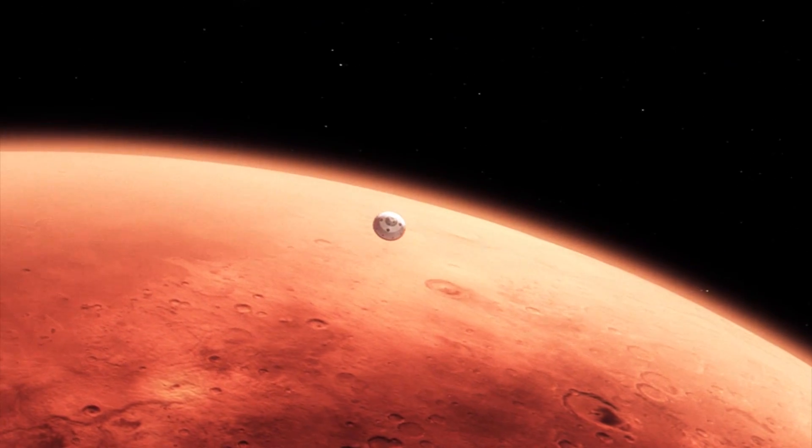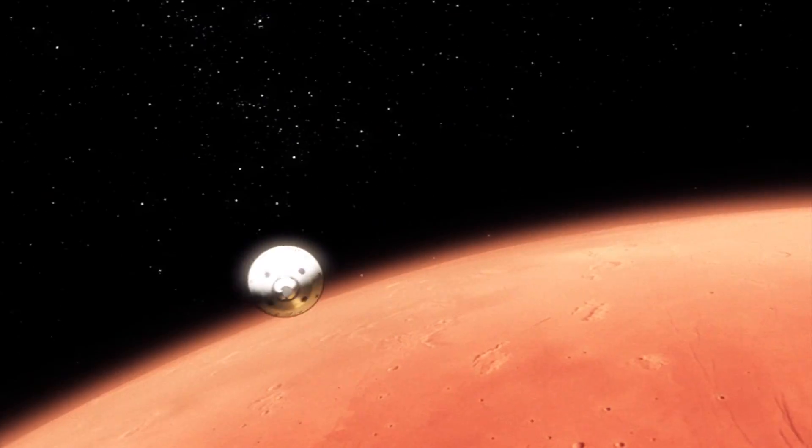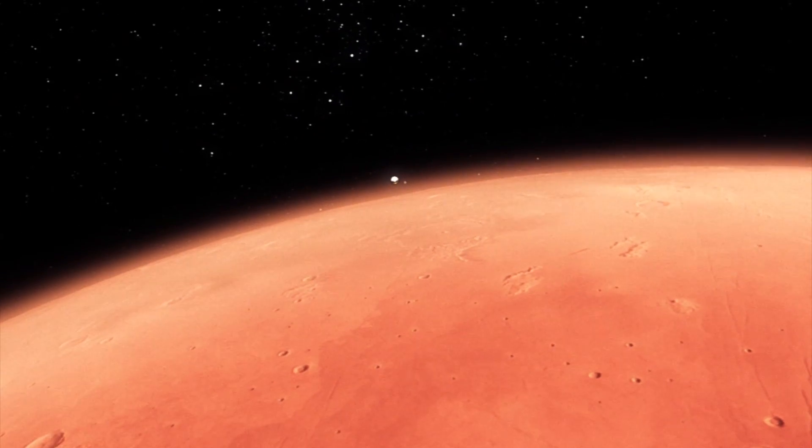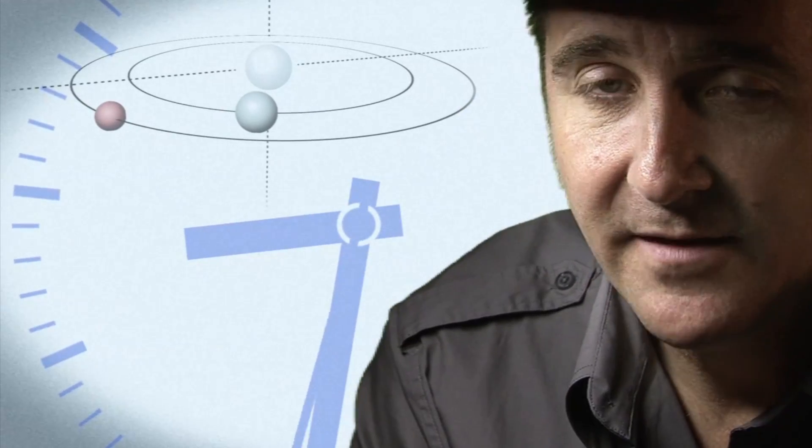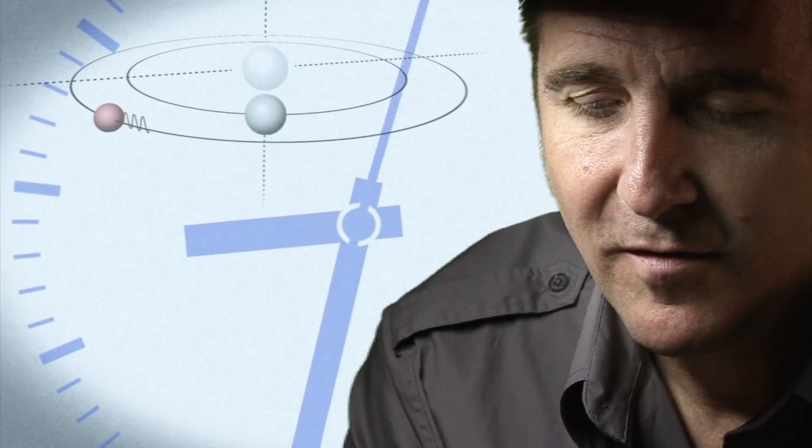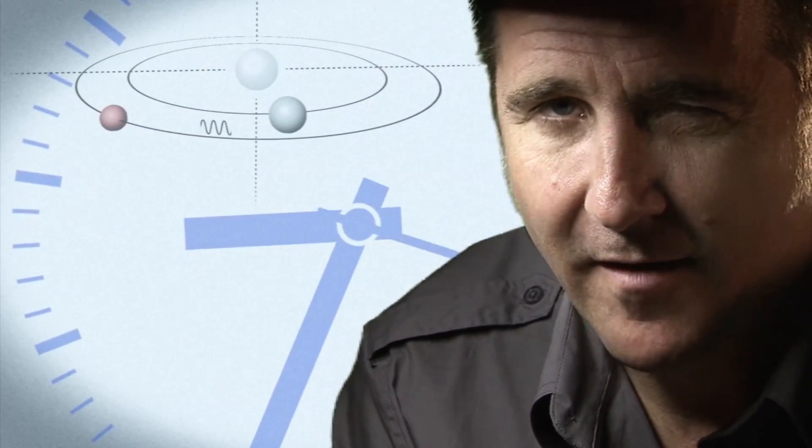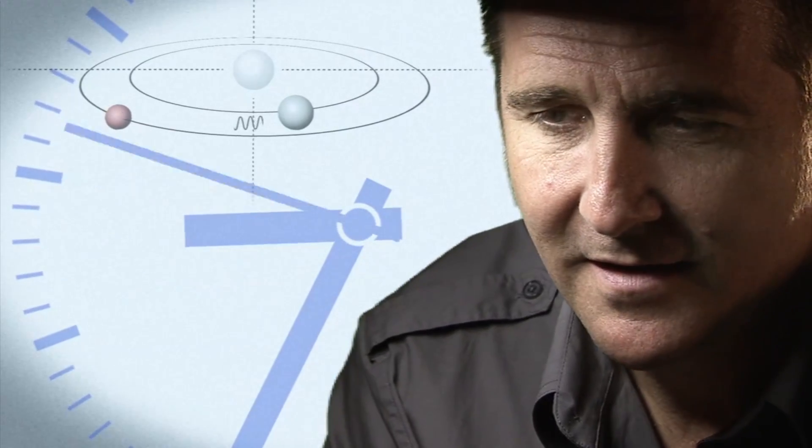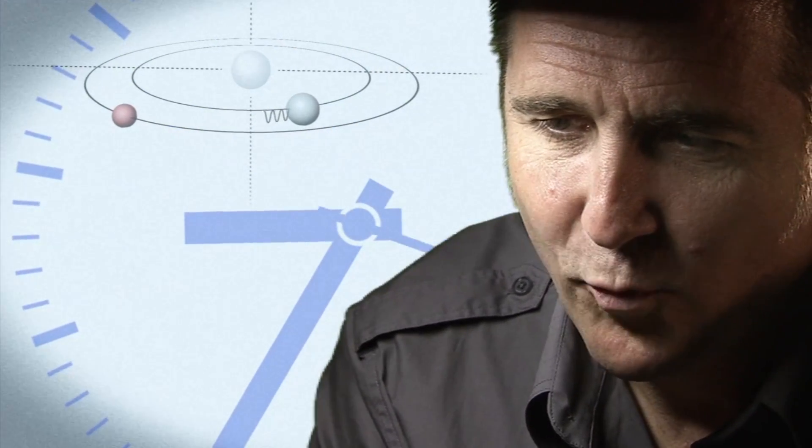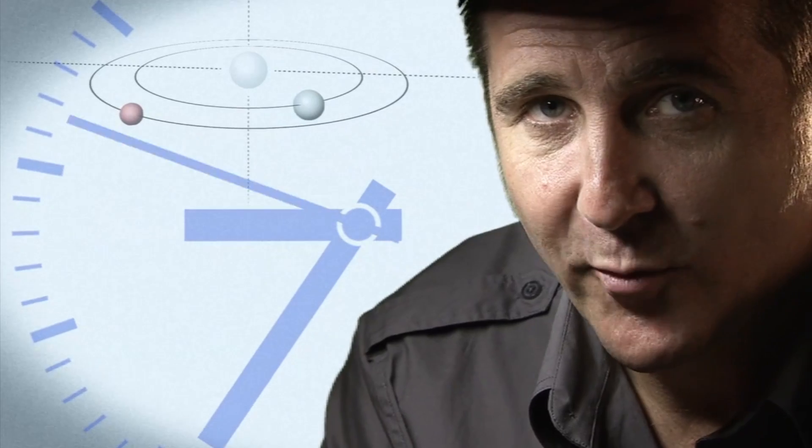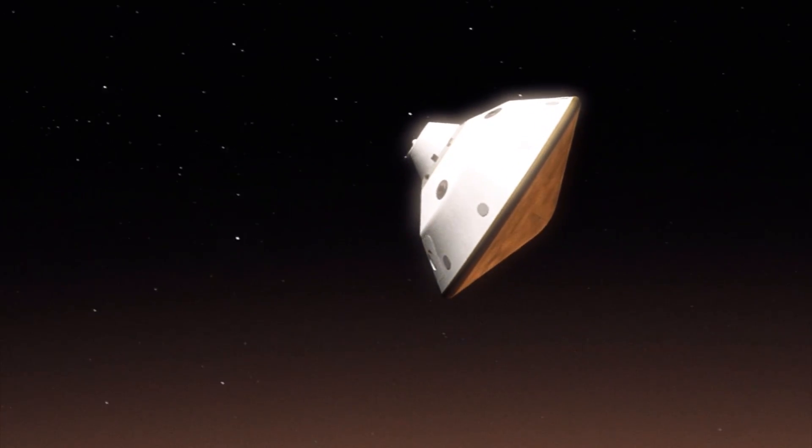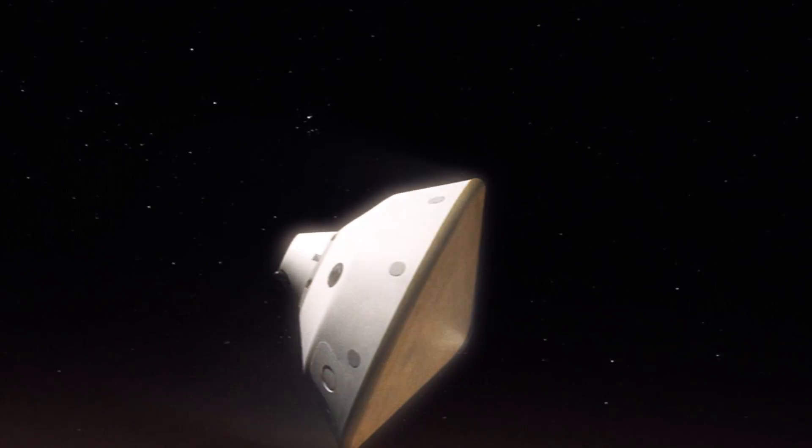From the top of the atmosphere down to the surface, it takes us seven minutes. It takes 14 minutes or so for the signal from the spacecraft to make it to Earth. That's how far Mars is away from us. So when we first get word that we've touched the top of the atmosphere, the vehicle has been alive or dead on the surface for at least seven minutes.